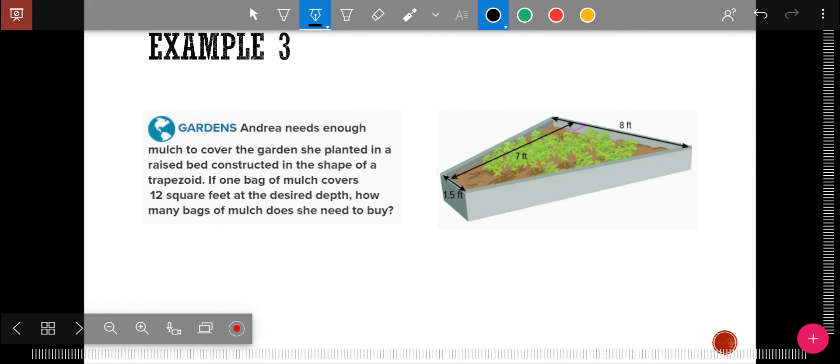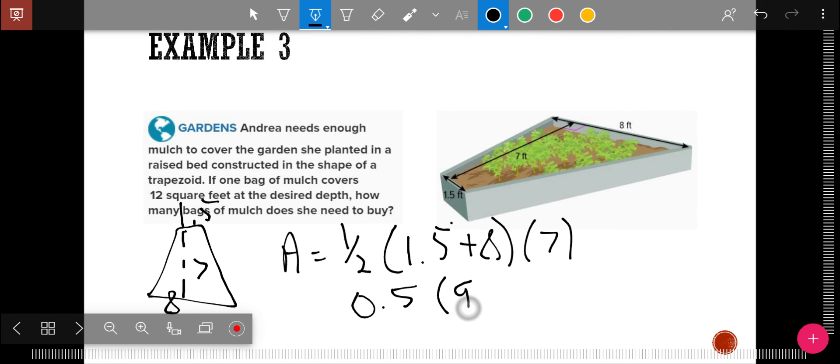And so for this example here, Andrea needs enough mulch to cover the garden, and one bag of mulch covers 12 square feet. How many bags of mulch should you need to buy? And so I'm going to really quick redraw the trapezoid so that I see the height here, seven, straight up and down. That makes the bottom eight and the top 1.5. And so area equals one half. I add 1.5 plus eight together. And the height is seven. So I get, I'm going to change one half to 0.5 times 9.5 times seven. And then I'm just going to use that in a calculator. I get 33.25.